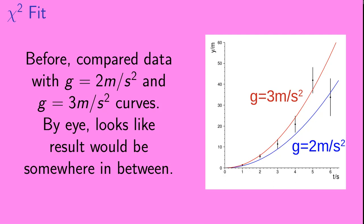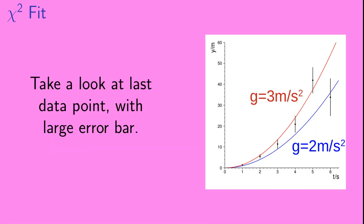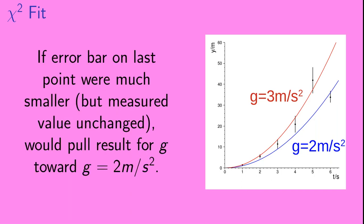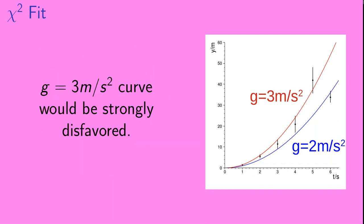Before, we compared these data points with curves where g is equal to 2 meters per second squared and g is equal to 3 meters per second squared. By eye, it looks like the result for g would land somewhere in between those two values. But let's take a look at that last data point with the large error bar. If the error bar on that last point were much smaller, but the measured value itself was unchanged, this would pull the result for g toward g equals 2 meters per second squared. And if that were the case, the g equals 3 meters per second squared curve would be strongly disfavored.